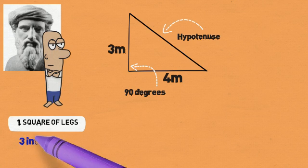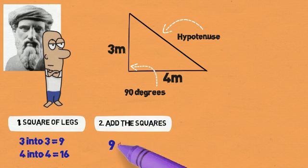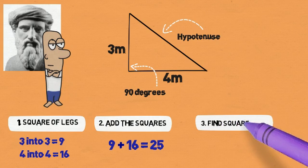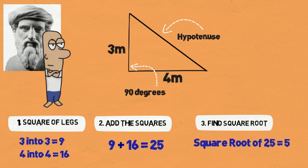First, she finds the squares of the two legs. So the square of 3 is 3 into 3, which is 9. And the square of 4 is 4 into 4, which is 16. She then adds these two numbers together. So 9 plus 16 is equal to 25. Now, according to the theorem, the length of the hypotenuse is equal to the square root of 25. And the square root of 25 is 5.